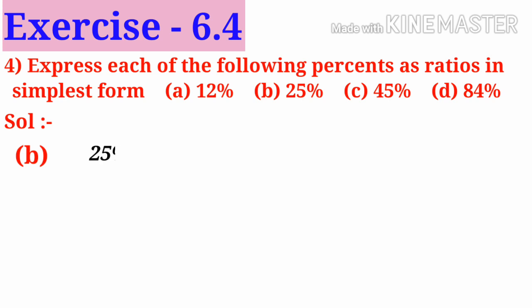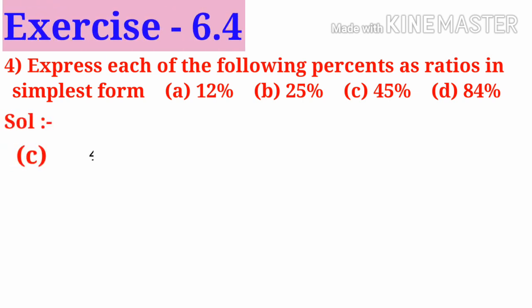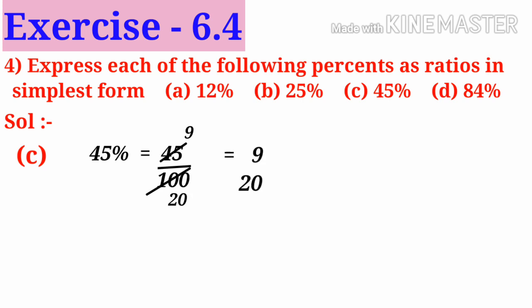B: 25 percent can be written as 25 by 100. On simplification by 25, we get 1 by 4, which can be written as 1 is to 4 in the simplest form. C: 45 percent, that is 45 by 100. On simplification by 5, we get 9 by 20, which can be written as 9 is to 20.